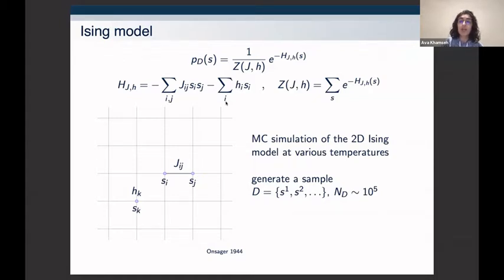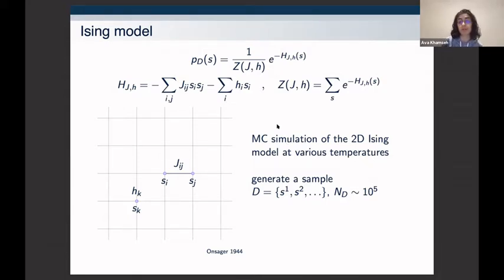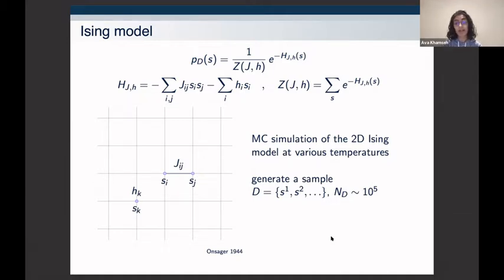Using Monte Carlo simulations we generate many Ising configurations at various values of temperature or coupling. To avoid the problem of limited training data for the moment, we generate large numbers of configurations — 100,000 training examples was enough to train the machine well. At this point we know the Hamiltonian we input into the simulation, but what we want to extract is the coupling, having been blind to what type of Hamiltonian the data was generated from.